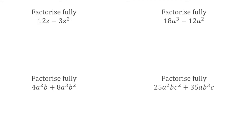For this first one, we have 12z take away 3z squared. Looking at the number parts, we've got 12 and 3 — the highest common factor is 3. We have z on the left and z squared on the right, so the base is z and we take the lowest power, giving us a z on the outside. Inside the bracket: we need 12z, which is 3z multiplied by 4, then take away. We then need 3z squared, which is 3z multiplied by another z.